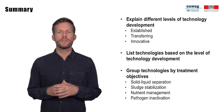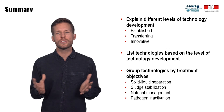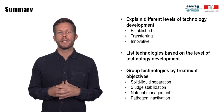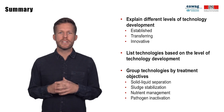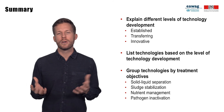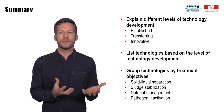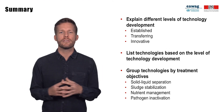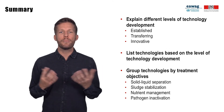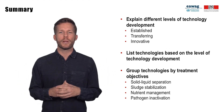In this module, you were introduced to different treatment technologies for fecal sludge. Technologies have different levels of development based on existing knowledge from research, design, and operation and maintenance, which should be considered when selecting treatment technologies. Knowing the treatment objectives — for example, solid-liquid separation for an unplanted drying bed, or sludge stabilization, nutrient management, and pathogen inactivation for co-composting — is important to select and combine technologies for a complete fecal sludge treatment plant.